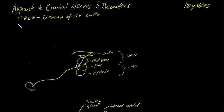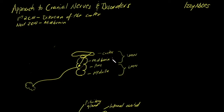Your next two cranial nerves — three and four — your trochlear (four) and your oculomotor (three) — actually originate in the midbrain. If you remember your neural anatomy, the brainstem is composed of three sections: the midbrain at the top, the pons in the middle, and the medulla at the lowest aspect. Cranial nerves three and four originate from the midbrain.